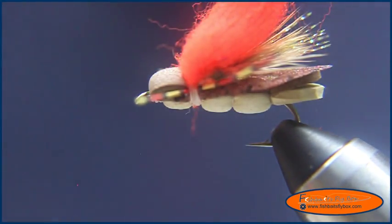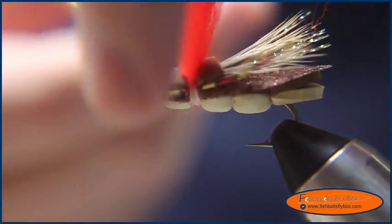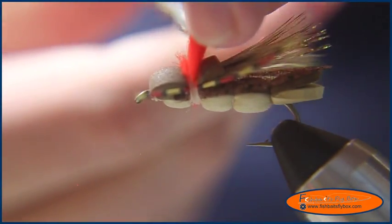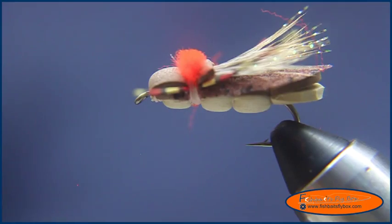Cut the thread. And we want to cut this indicator down too. Cut it... The idea is just to be able to see it in the water. So we're going to cut it down just behind the wing case there. And there you have it. That is a hopper wand.